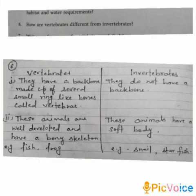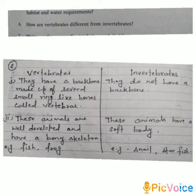Question number six: how are vertebrates different from invertebrates? Vertebrates have a backbone made up of several small ring-like bones called vertebrae, whereas invertebrates do not have a backbone. Second point: vertebrates are well-developed and have a bony skeleton, while invertebrates have a soft body.